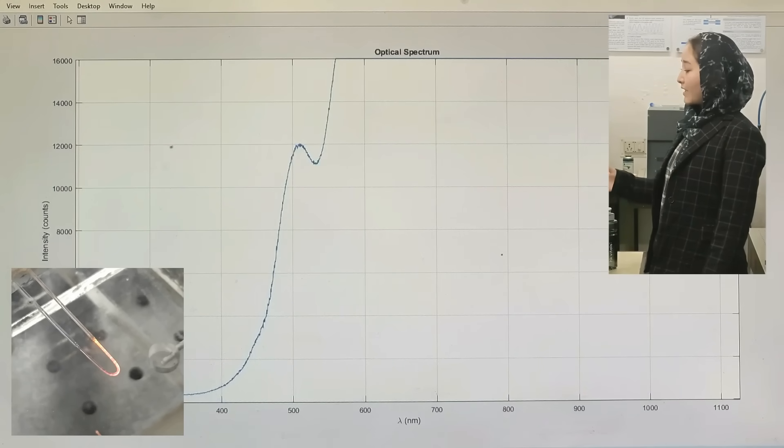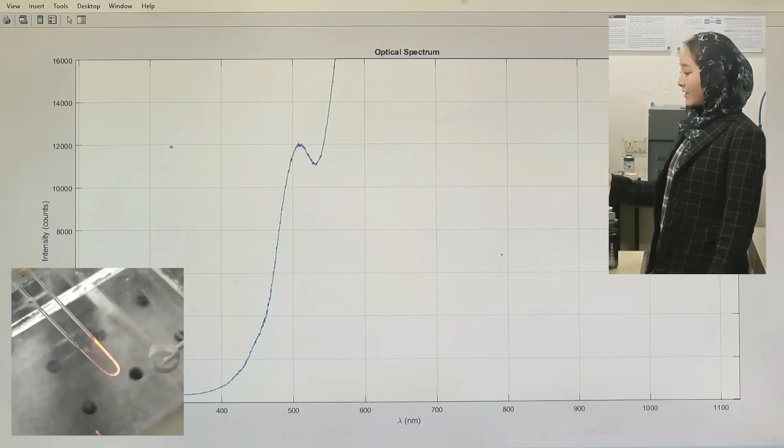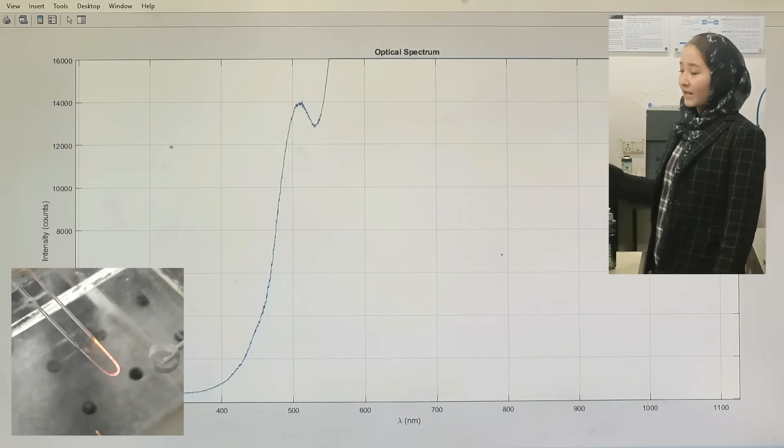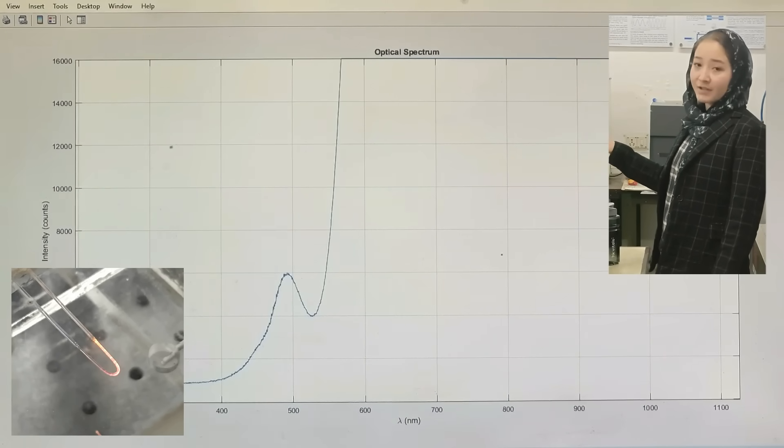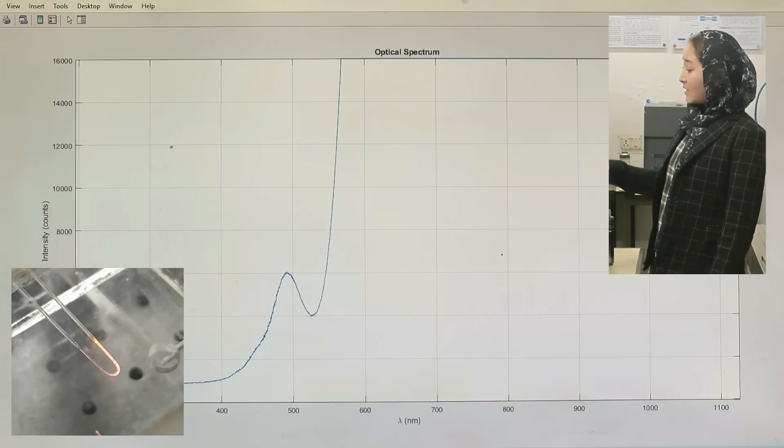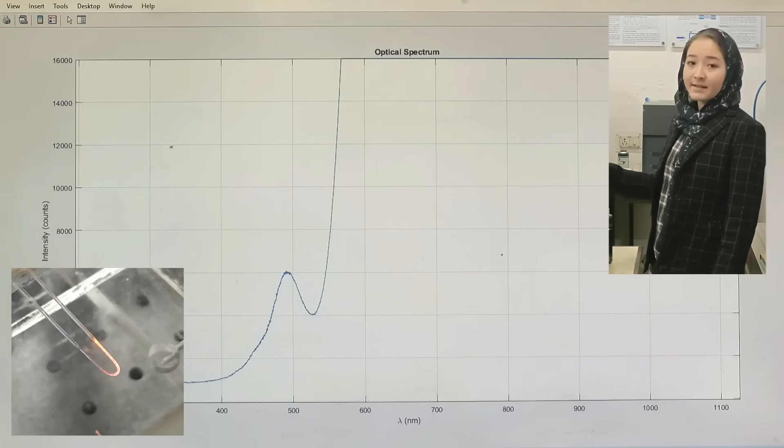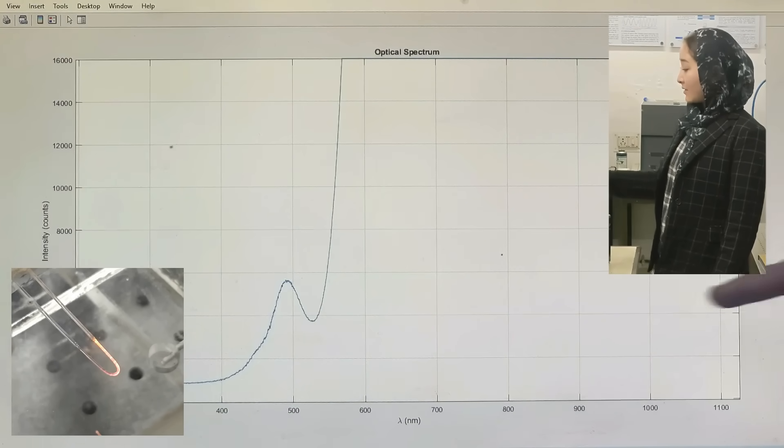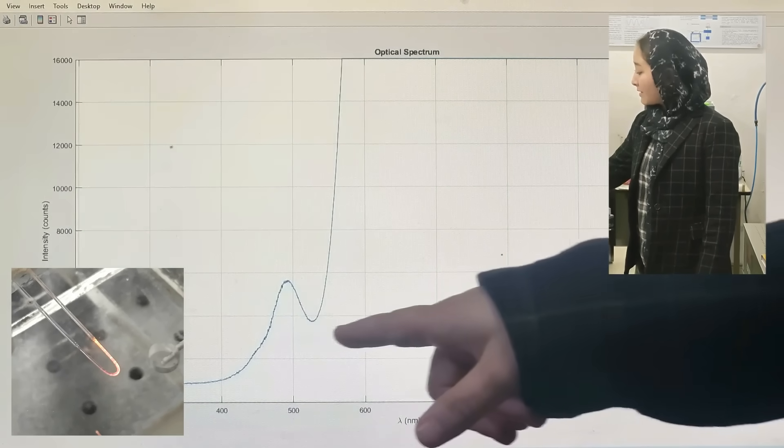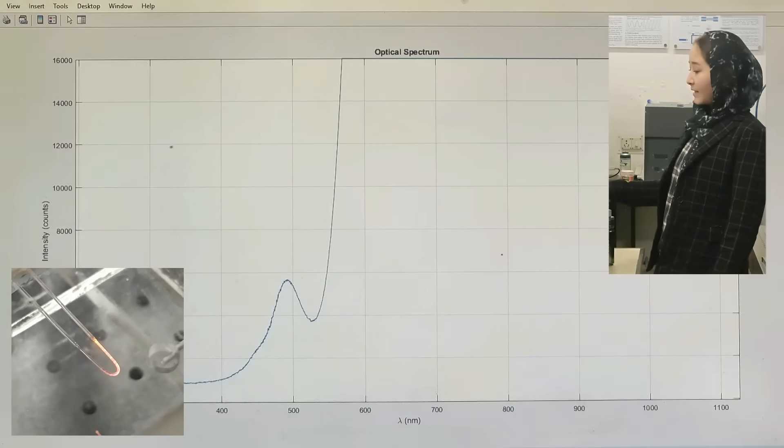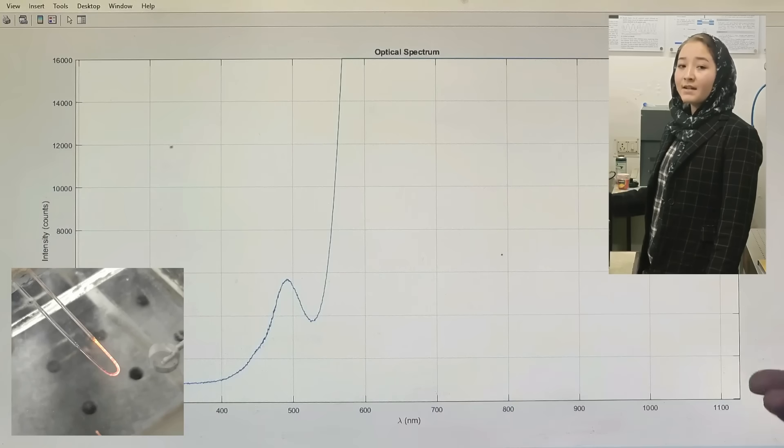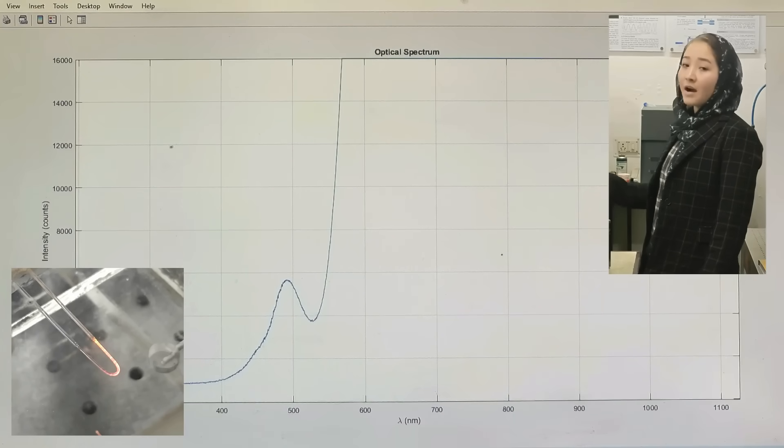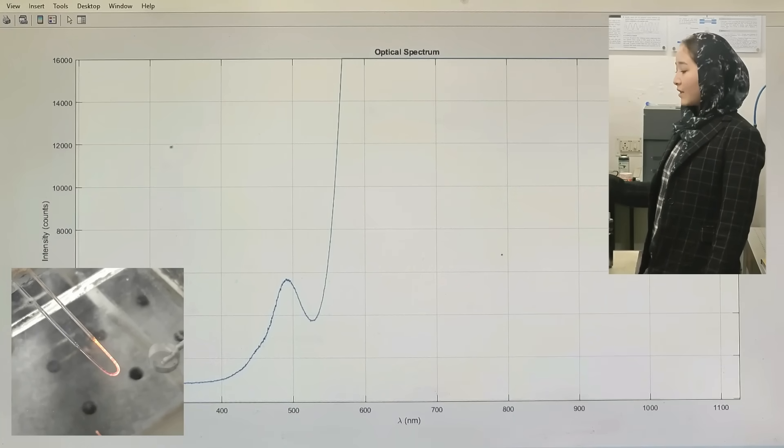Now I am going to expose the sensor to some real water sample which contains some amount of arsenic in it. As you can see, when we expose the sensor to the real water sample, the LSPR spectrum changes instantaneously and the resonance dip also changes instantaneously. This shows that our sensor can give instantaneous information about the arsenic content present in the real water sample.